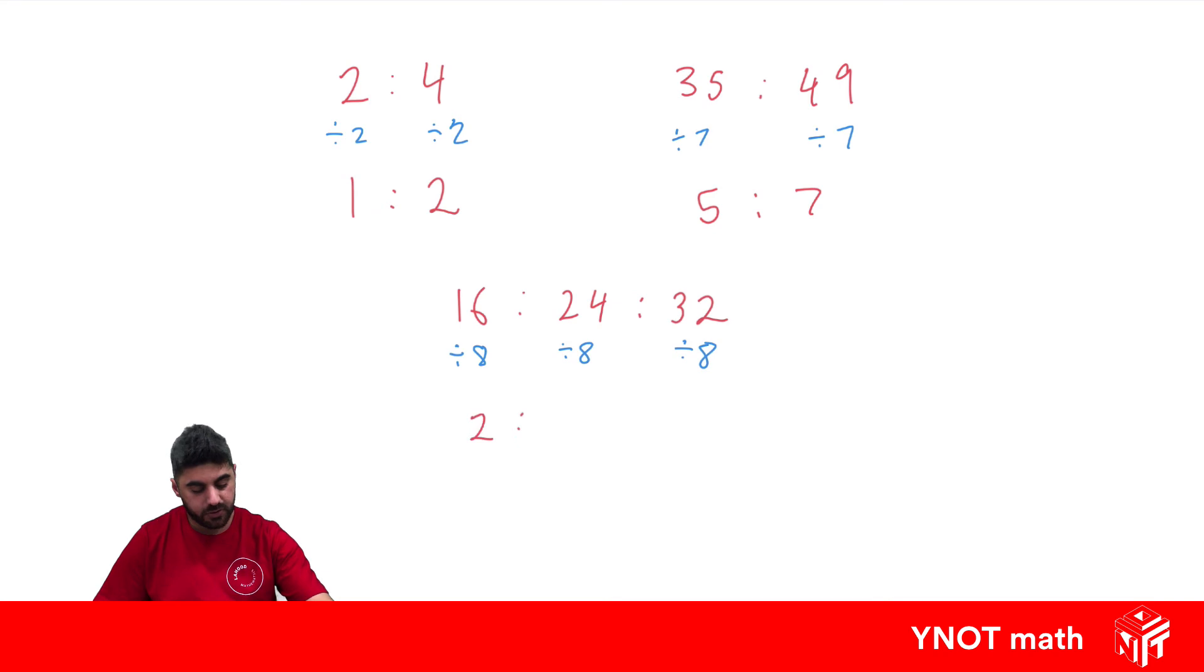16 divided by 8 is 2. 24 divided by 8 is 3. And 32 divided by 8 is 4. And that's the fully simplified ratio.